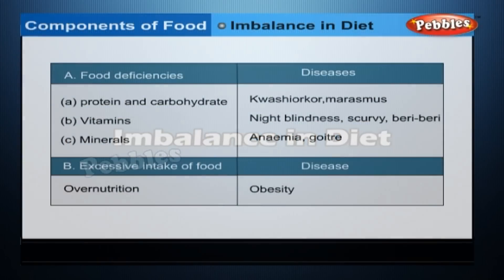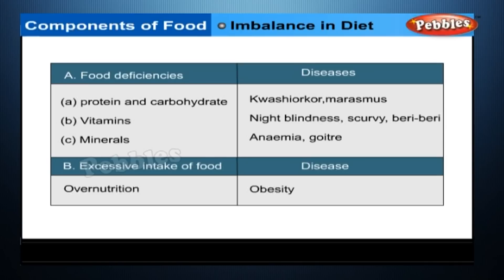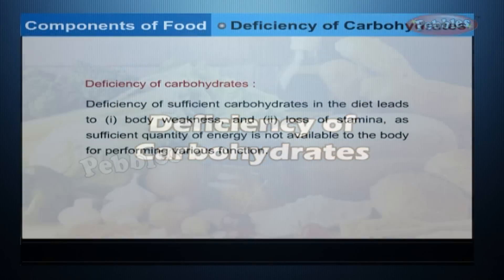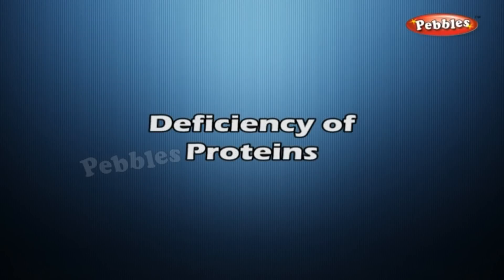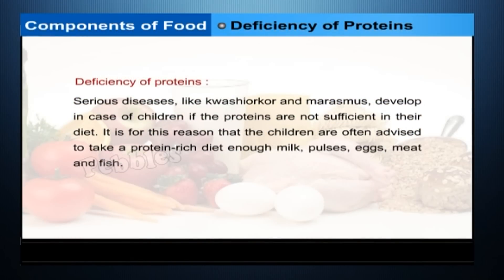Imbalance in Diet: Diseases due to imbalance in diet include deficiency conditions. Deficiency of sufficient carbohydrates leads to body weakness and loss of stamina, as sufficient energy is not available for performing various functions. Serious diseases like Kwashiorkor and Marasmus develop in children if proteins are not sufficient in their diet. Children are advised to take a protein-rich diet with enough milk, pulses, eggs, meat and fish.